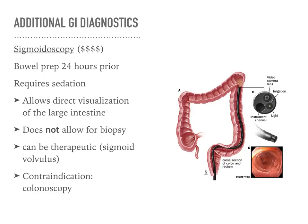A sigmoidoscopy also requires a bowel prep — as does the colonoscopy mentioned previously. The sigmoidoscopy requires sedation and allows direct visualization of the large intestine to look for polyps. It can also be therapeutic for a sigmoid volvulus.